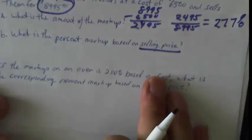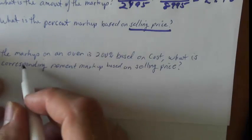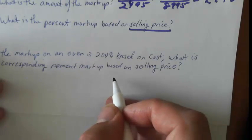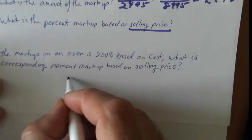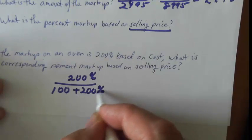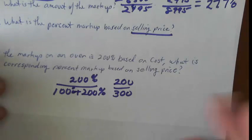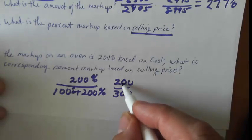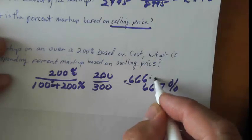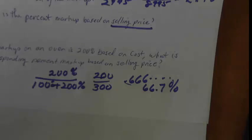Number 20: if the markup on an oven is 200% based on cost, what is the corresponding markup based on selling price? This uses one of those formula-driven problems like 5 and 6. Since it's based on cost, we add: 200 over 100 plus 200, which is 200 over 300. Doing the division, 200 divided by 300 equals .666 repeating, so moving the decimal over gives us 66.7%. Keep track of what you're doing and you'll be fine.